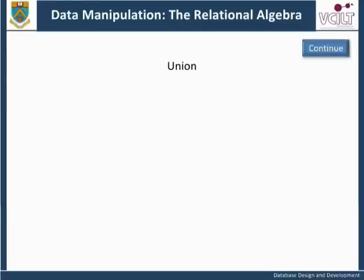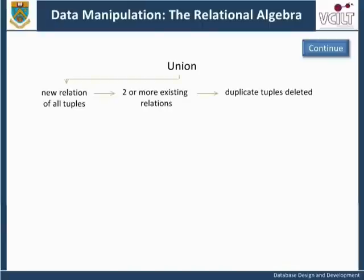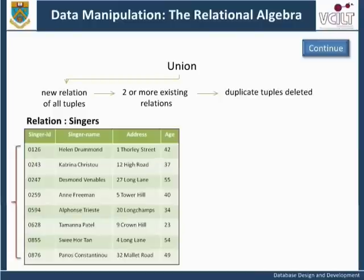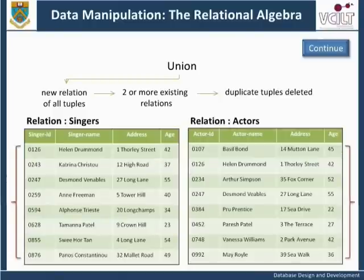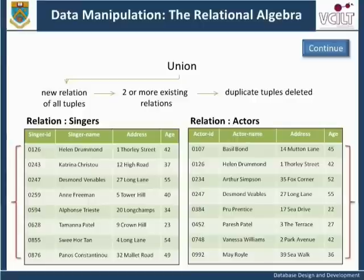The Relational Algebra Operation Union, also called append, forms a new relation of all tuples from two or more existing relations with any duplicate tuples deleted. The participating relations must be union compatible. Here are two relations, singers and actors. The relation singers and actors have the same number of attributes and these attributes are the same data types: the identification numbers are numeric, the names are character fields, the address field is alphanumeric, and the ages are integer values.